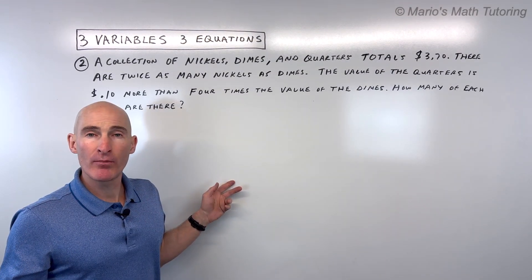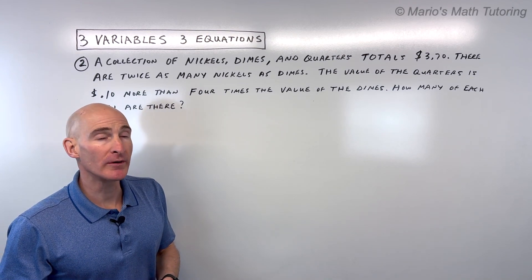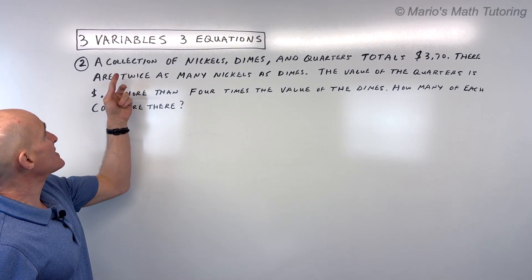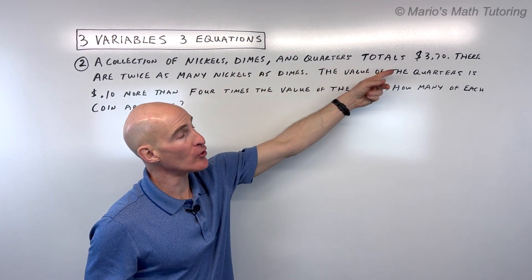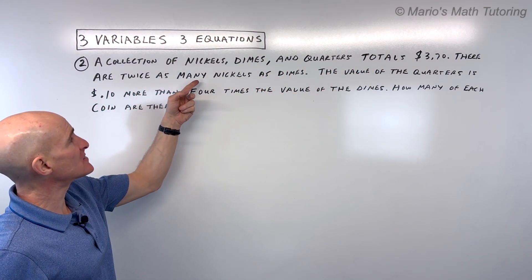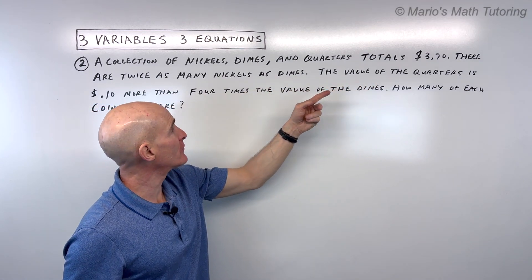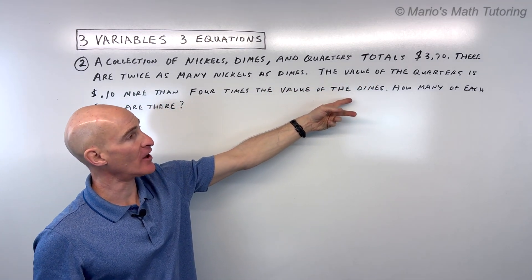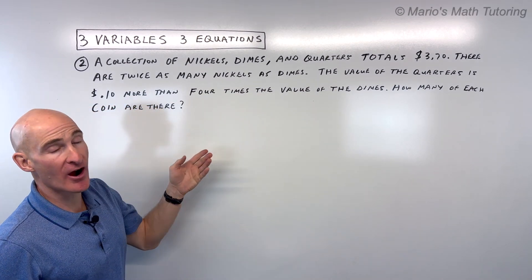Let's look at the next example — pause the video and try it yourself first. A collection of nickels, dimes, and quarters totals $3.70. There are twice as many nickels as dimes, and the value of the quarters is $0.10 more than four times the value of the dimes. How many of each coin are there?